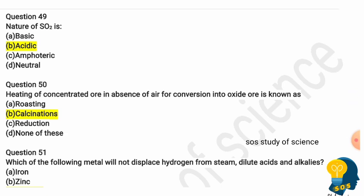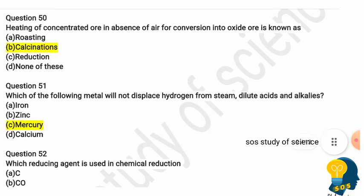Question 48: The nature of sulfur dioxide is? Options are basic, acidic, amphoteric, or neutral. The correct answer is acidic, because sulfur dioxide is acidic in nature. Question 50: Heating of concentrated ore in the absence of air for conversion into oxide ore is known as? Options are roasting, calcination, reduction, or none of these. The correct answer is calcination — under calcination, carbonate ore is heated strongly in the absence of air.